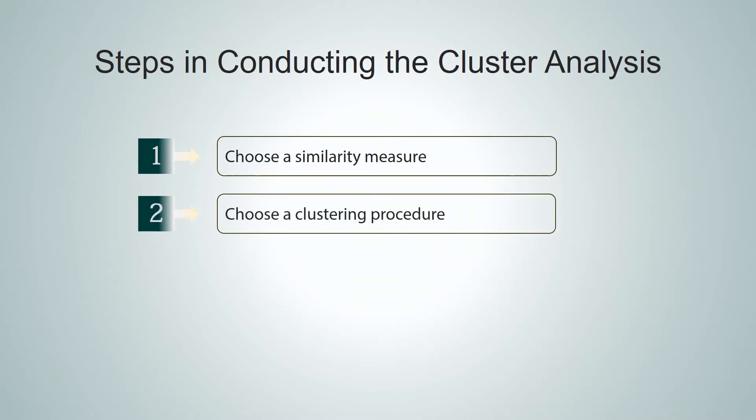We need to find out a way by which we will try to measure the similarity between the objects. That is step number one. And we need to choose a clustering procedure. There are several clustering procedures to start with, hierarchical clustering and non-hierarchical clustering. And within each of these two broad categories, there are few other subdivisions. We will be looking at them in a minute from now.